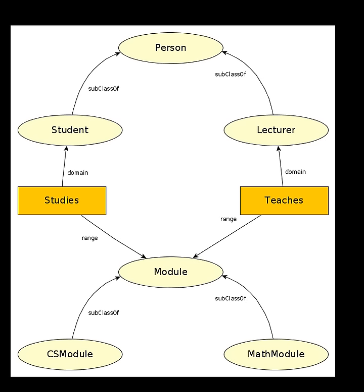Now, the ontology that I'd like to design today looks like this. We have several classes: Person, Student, Lecturer, Module, CS Module, and Math Module.